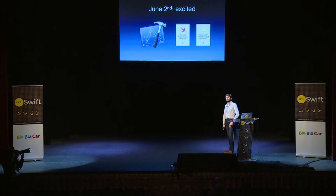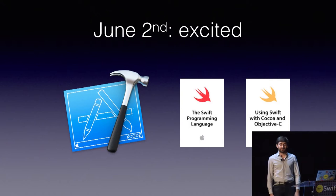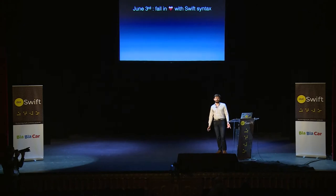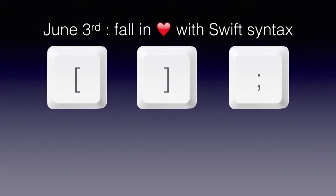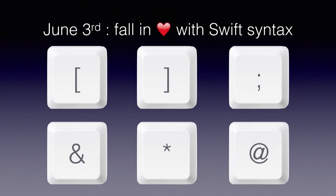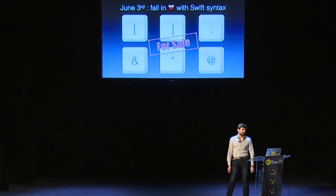Here is how the love story goes. June 2nd, you're excited about the announcement, you see all these new features, you download Xcode, download the books, read them, and figure out it's a great future. The next day, you fall in love with Swift syntax — no more square brackets, no more semicolons at the end of sentences, no more pointer arithmetic, no more pointers at all. No more weird @ keywords introduced just for the sake of C compatibility. You're so much in love you go sell those useless keys on Craigslist or something.